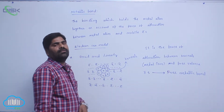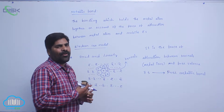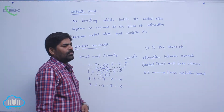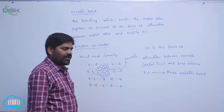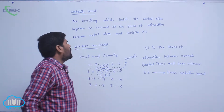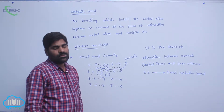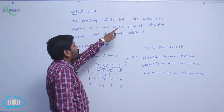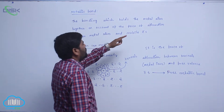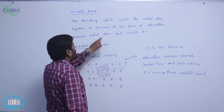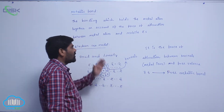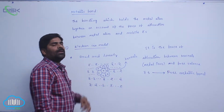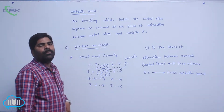A metallic bond is a special type of bond between metal ions. Compared to other bonds, it is different, as it is formed by the mobility of electrons to the metal ions. The bond which holds the metal atoms together is due to the force of attraction between metal atoms and mobile electrons. This particular bond is known as the metallic bond. To explain the metallic bond, two important theories are proposed.